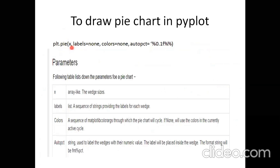The data will be passed as x — whatever array or size you want to draw. Labels are also needed: if I divide the pie chart into four or five parts but do not know the names, the data has no meaning. So labels are very important. Colors are optional. Then there is autopct.